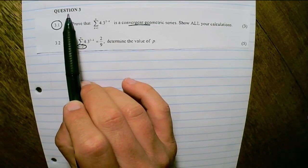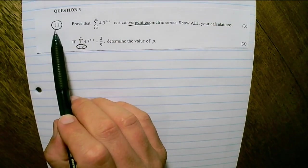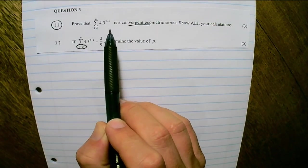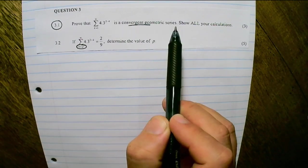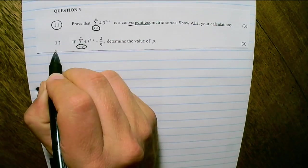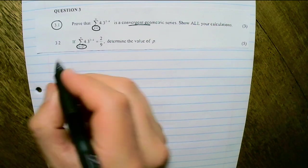We are going on with Paper 1 of 2020 and this is Question 3. Question 3.1 says, prove that this sigma notation is a convergent geometric series. We notice that the lower parameter is k equals 1, so our substitution for k would start at 1 and goes up until infinity.